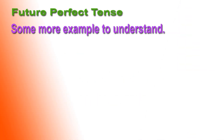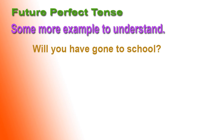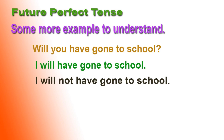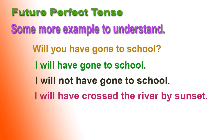Some more examples to understand. Will you have gone to school? I will have gone to school. I will not have gone to school. I will have crossed the river by sunset.